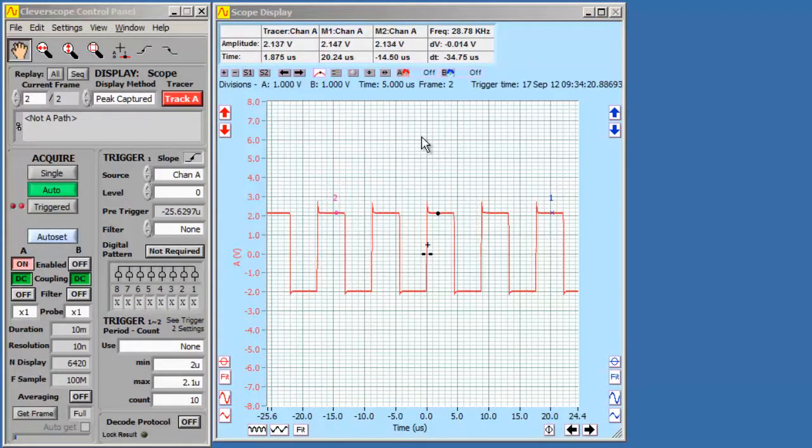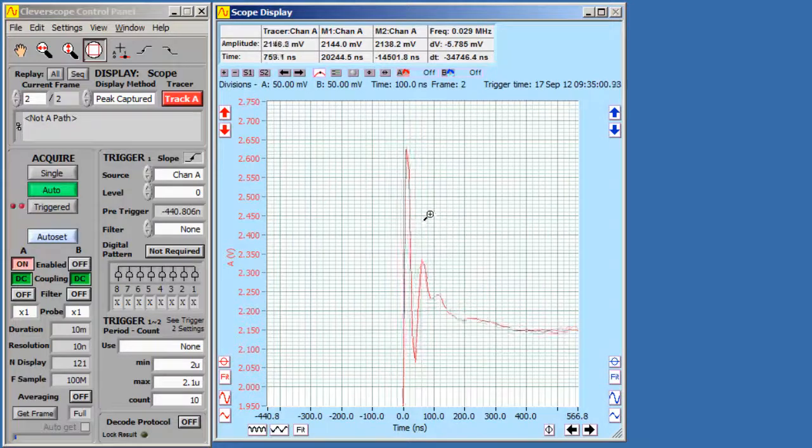Right, now let's do the same with a CleverScope. First, let's zoom on the pulse overshoot using the magnify tool. Fast, eh?